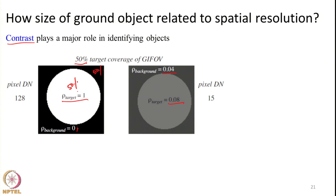The average reflectance or average DN produced in this case is 128, assuming 8-bit quantization. Whereas for the pixel where the difference in reflectance is pretty low, the DN will be 15. So contrast between background and feature is going to play a major role.